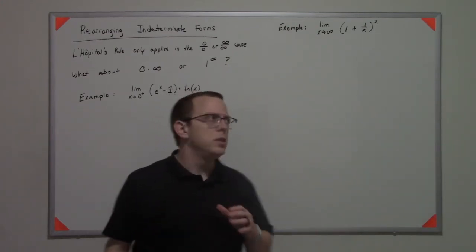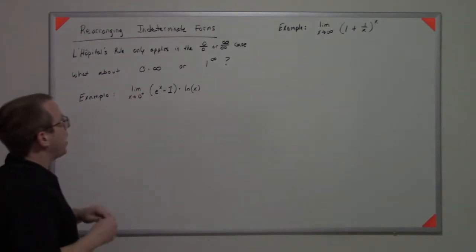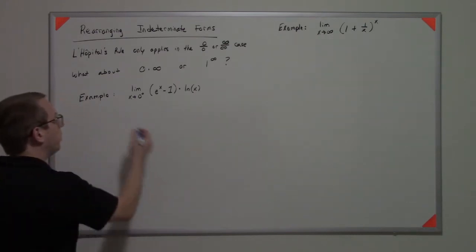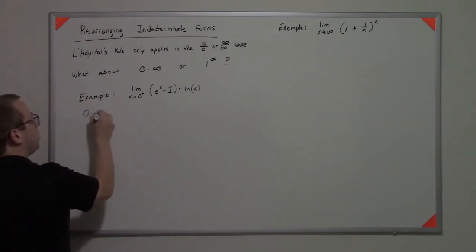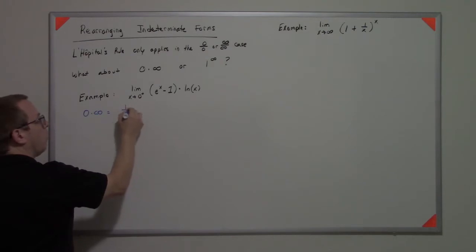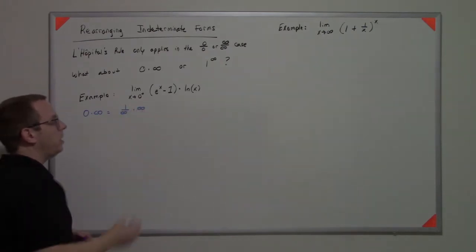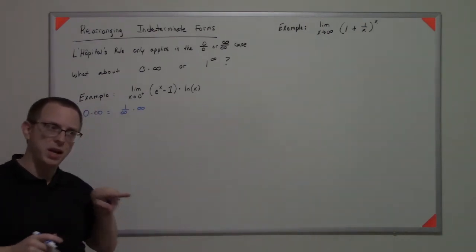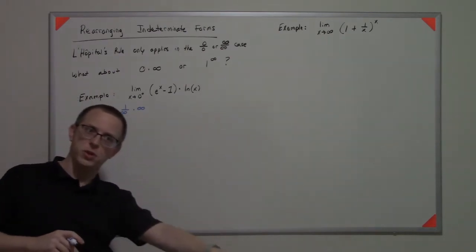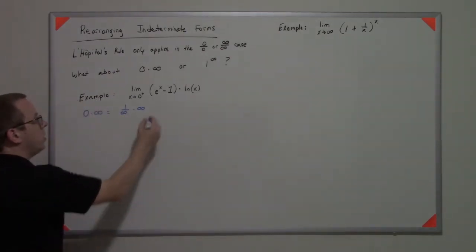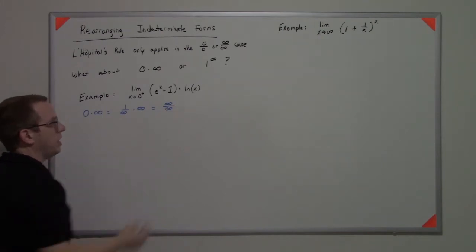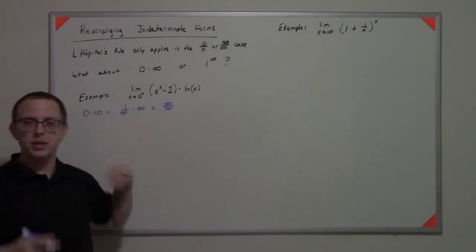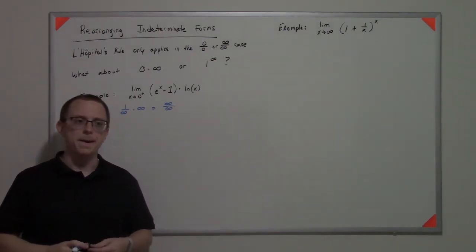What we want to do is realize that 0 times infinity is really 1 over infinity times infinity — because if you have 1 over something and it's shooting off to infinity in the bottom, it drives the whole fraction down to 0. So this is really an infinity over infinity case, just written in a way that's not necessarily intuitive.